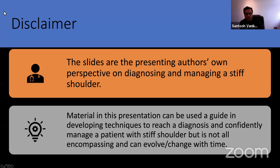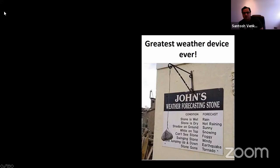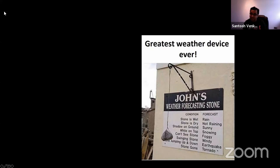We're starting with a clinical scenario like an exam where the examiner tells you: talk to this patient about his shoulder, he's got a very stiff shoulder and he's come to the clinic. What we tend to notice is that textbooks put everything in boxes — like a weather device that says if the stone is wet it's raining, if it's dry it's not raining, if it's swinging it's windy, and if the stone is gone it's a tornado. That's how textbooks tend to box these conditions.